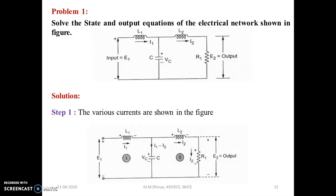The input is voltage provided in the first part of the circuit and the output to be inferred is across the resistor R1. The current I1 is flowing across the resistor, inductor L1, and the net current I1 minus I2 flows across the capacitor C, and I2 current flows through the inductor L2 and the resistor R1. There are two meshes: current I1 in the first mesh and current I2 in the second mesh.